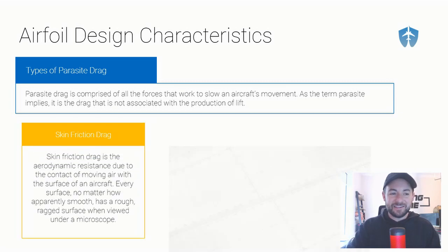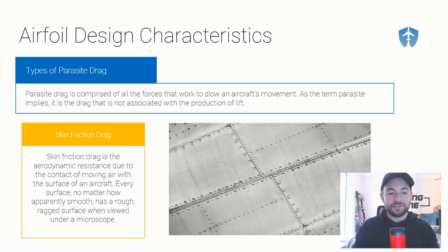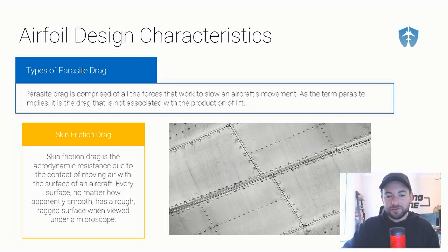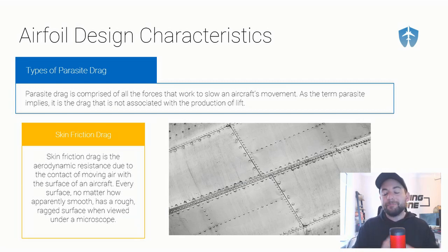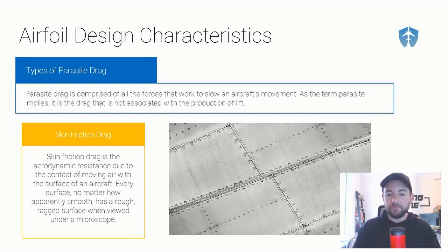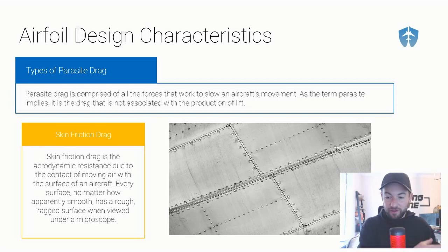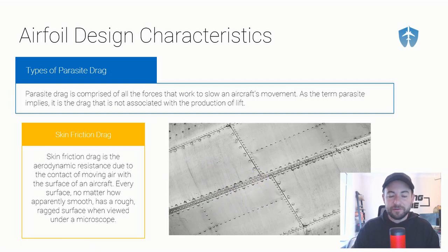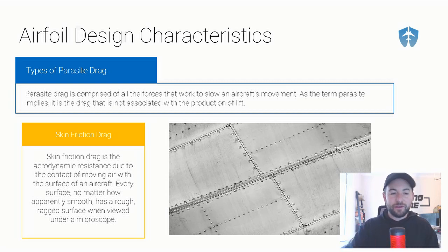The third type is skin friction drag — the aerodynamic resistance due to the contact of moving air with every surface of the aircraft, no matter how smooth it may look or feel. Even if a wing surface looks and feels completely smooth, it is not completely smooth when viewed under a microscope. All of the rivets and imperfections will cause drag with the airflow. These little rivets and imperfections in the aircraft skin create drag — that's why we call it skin friction drag.